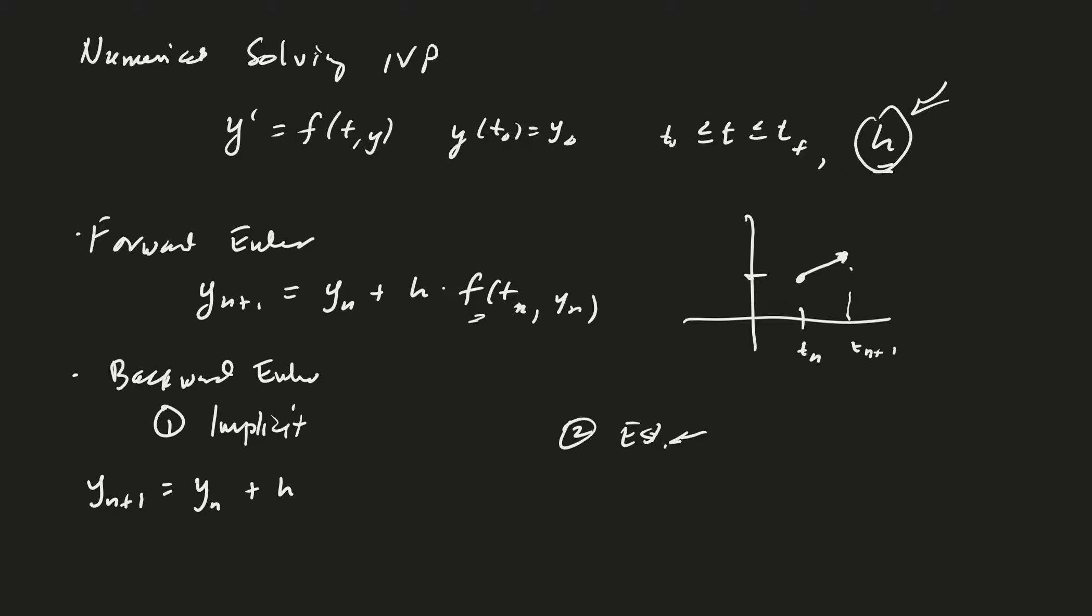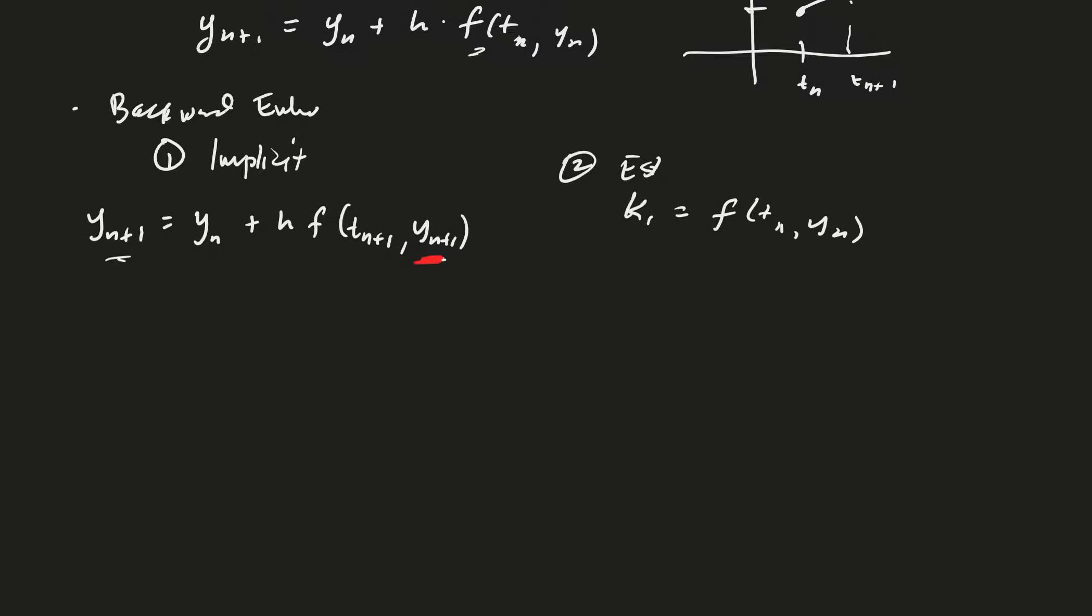You're evaluating f at the next point in time, but that's the unknown on both sides of the equation - that's why it's implicit. For the estimated version, we replace this with its Euler estimation. So k1 = f(tn, yn), then yn+1 = yn + h*f(tn+1, yn + h*k1).